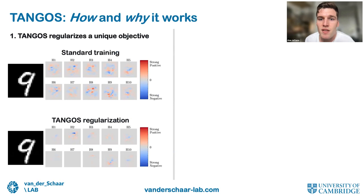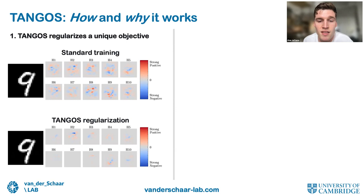TANGOS regularization encourages neurons to become specialized and orthogonal with respect to the input features throughout training. Different neurons are encouraged to attend to less overlapping subsets of input features — a suitable inductive bias for heterogeneous tabular data resulting in better generalization performance. In the paper we show this behavior is unique and not observed in neural networks trained with existing popular regularization methods.